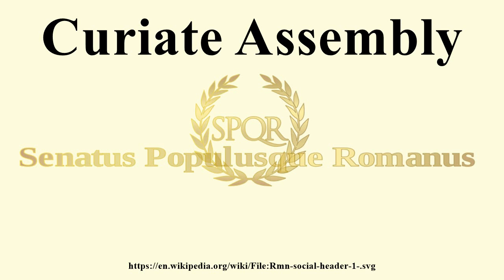Shortly after the founding of the Republic, the powers of the Curiate Assembly were transferred to the Century Assembly and the Tribal Assembly. While it then fell into disuse, it retained some theoretical powers, most importantly the power to ratify elections of the top-ranking Roman magistrates by passing a law that gave them their legal command authority. In practice, however, they actually received this authority from the Century Assembly, and as such, this functioned as nothing more than a reminder of Rome's regal heritage.